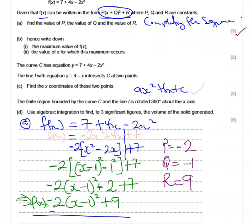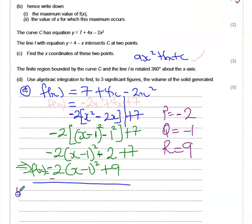Now the part B asks something quite interesting: we're meant to work out the maximum value of our f(x). What you should note is the fact that whenever you have completed the square for a function, whatever value that you find as the constant term here will actually be your maximum or minimum value for your f(x). So we say maximum value of f(x) equals 9.